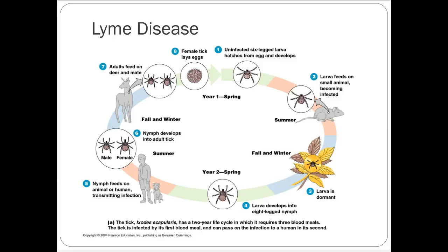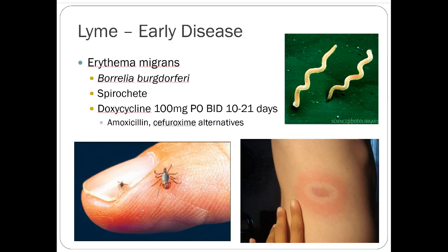Lyme disease, however, is pretty common, especially in Minnesota and the upper Midwest. It's a tick-borne illness caused by the bacteria Borrelia burgdorferi, a spirochete similar to syphilis in cell type and how it affects the body. It has stages of infection very similar to syphilis. Doxycycline is the drug of choice — 100 mg PO BID for 10 to 21 days, usually a two- to three-week course.